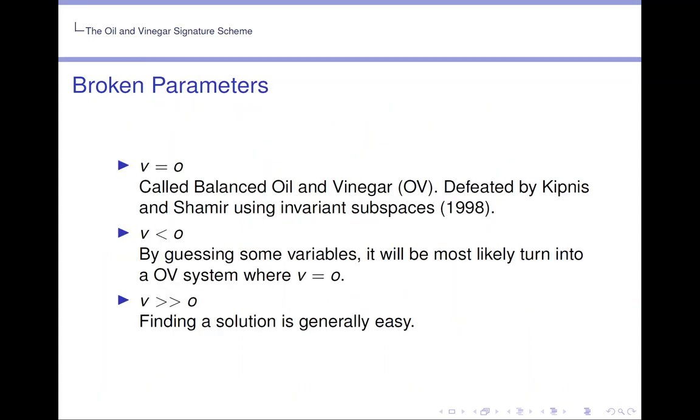So there's some broken parameters for oil and vinegar schemes. The original parameter suggested was v equals o, which is called balanced oil and vinegar. This is defeated by Kipnis and Shamir using invariant subspaces. If v is less than o, then by guessing some variables it has a potential to become balanced oil and vinegar again, which then could be easily broken. If v is much greater than o, then finding a solution is generally easy as well.